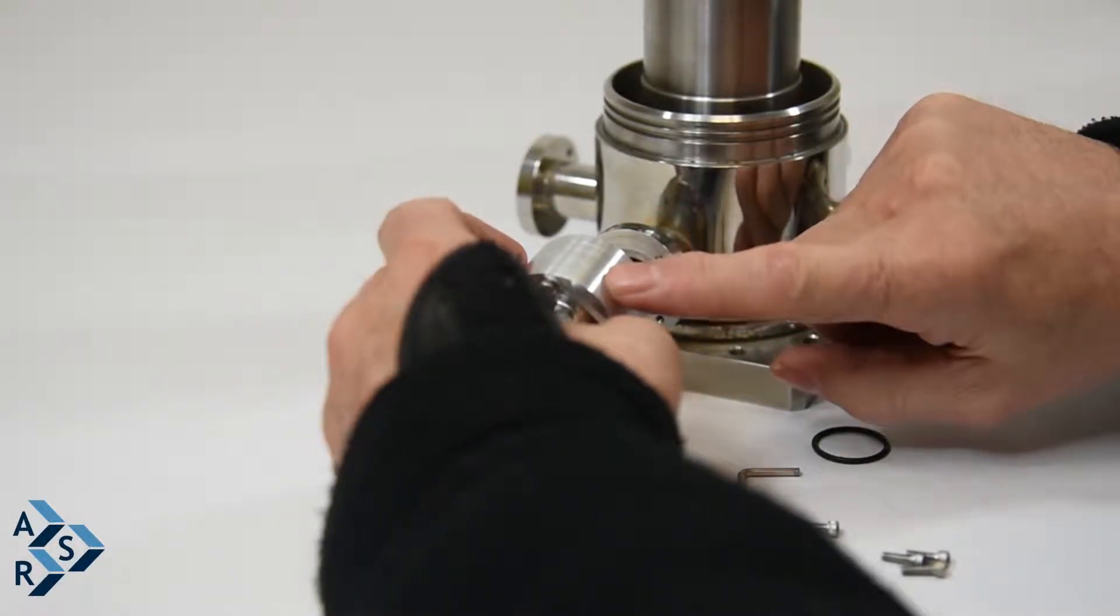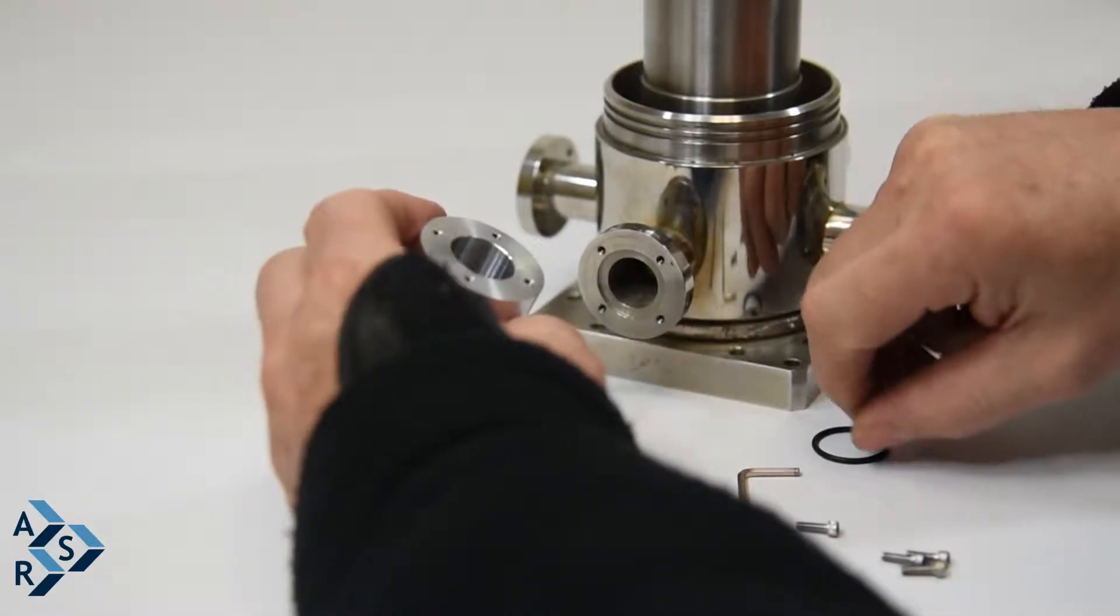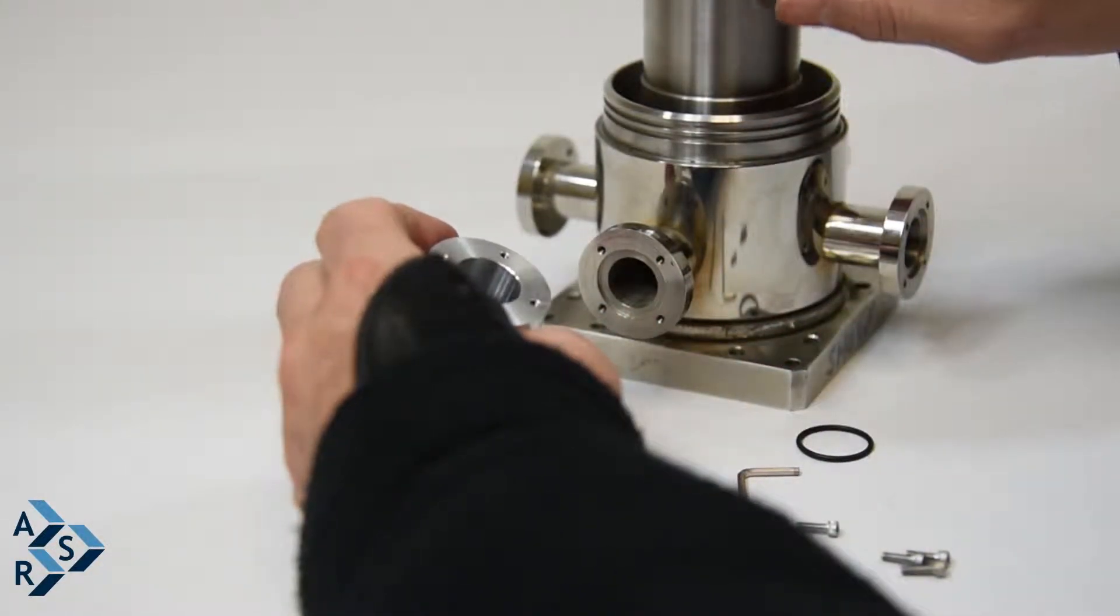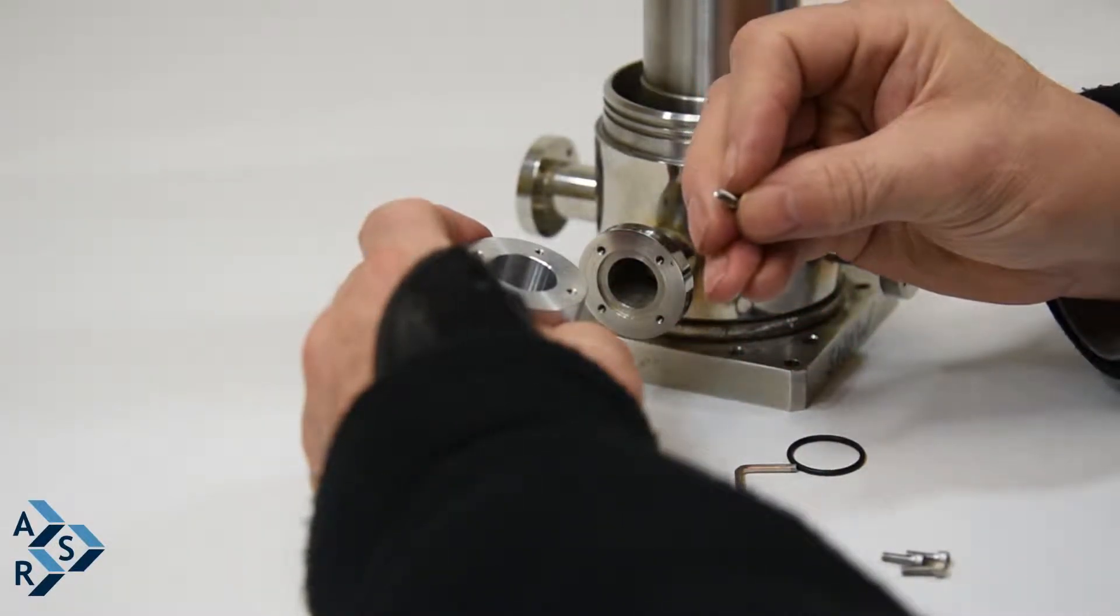So this is the adapter that you will use in order to get the 19 from 10. First, these are threaded for 440. The screws come with it.